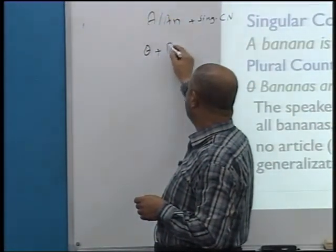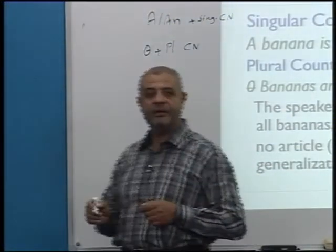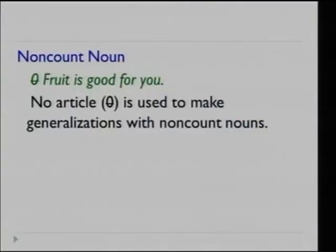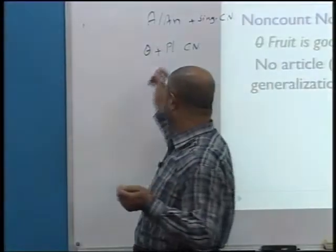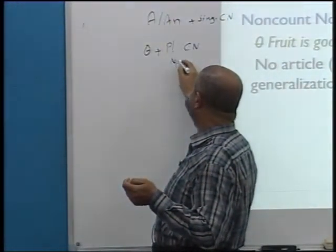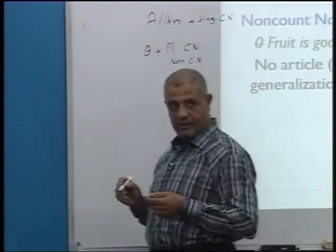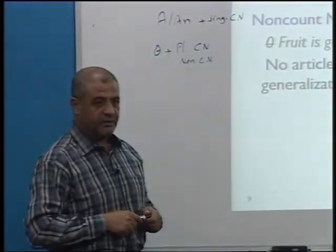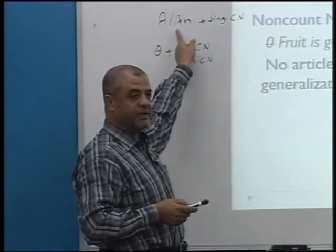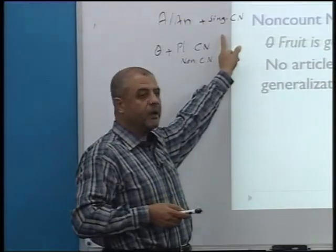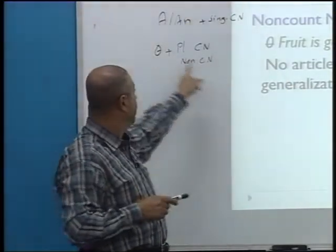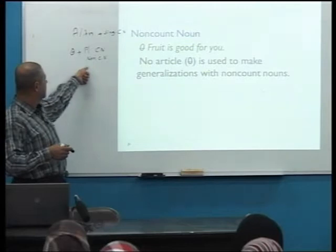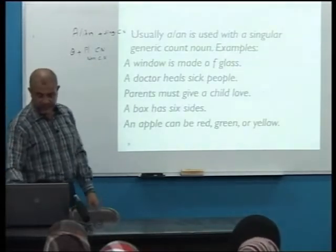We can also use zero article with plural count nouns to make nouns generic. And for non-count nouns, we use zero article as well. So what are the three ways for making generic nouns? A student should study hard, students should study hard — those are the examples.